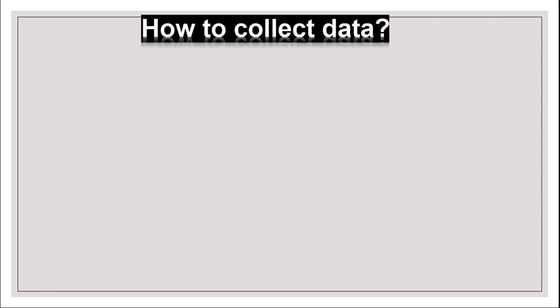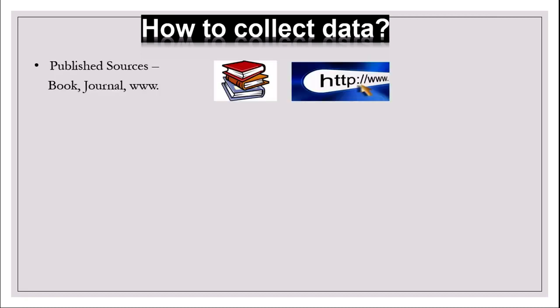Once you decide on the type of data, qualitative or quantitative, you need to collect the data. Generally, you can obtain data in three different ways. First, from a published source, such as a book, journal, newspaper, or website.